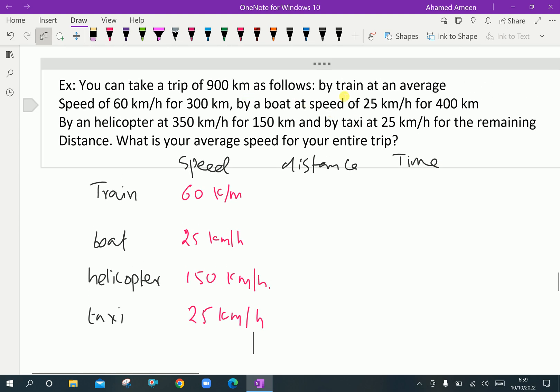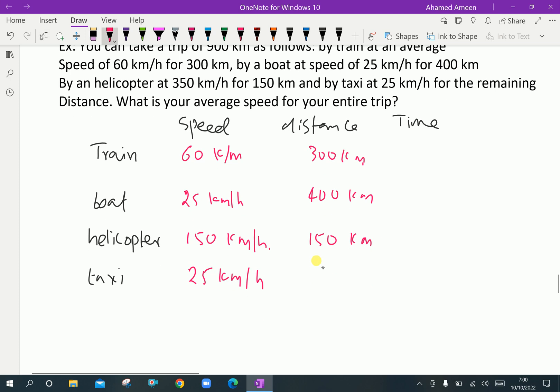Distance, this 900 is splitted for 300 for train, kilometer, and 400 is for boat. For helicopter is 150 kilometer. Then the remaining, total is 300 plus 400 is 700 plus 150, another 50 is 900. Here, 50 kilometer for taxi.